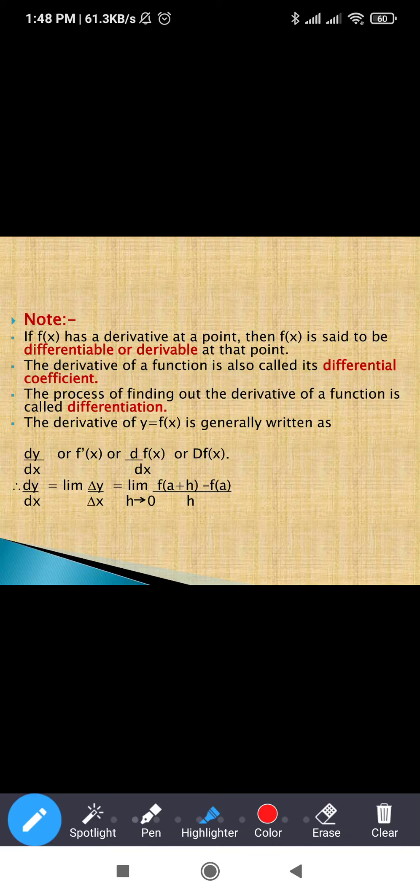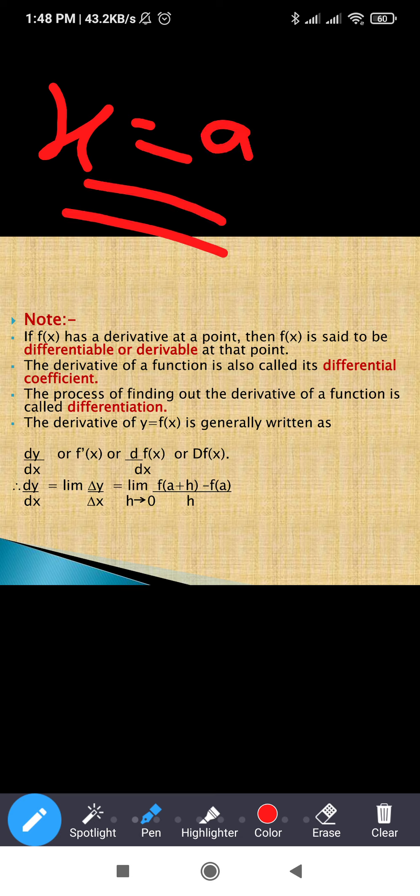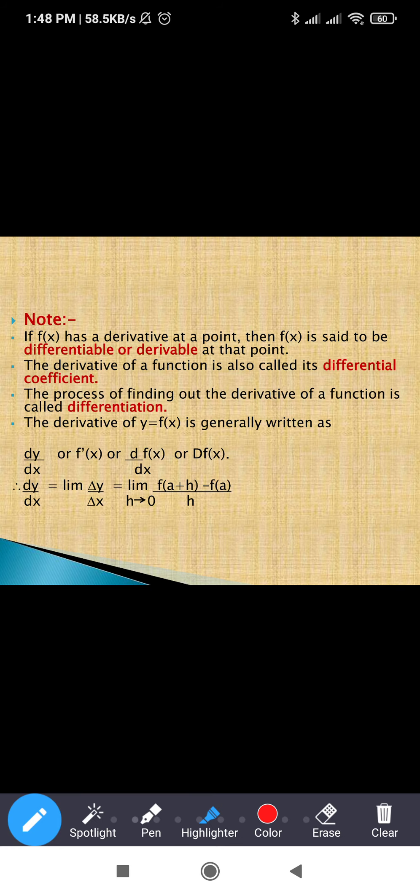Okay, some more basic things in derivatives. Let's note some more things. First note: if f(x) has a derivative at a point, then f(x) is said to be differentiable or derivable at that point. If we can find the derivative of a function at a certain point x equal to a, then we can say that function is differentiable or derivable at that point.